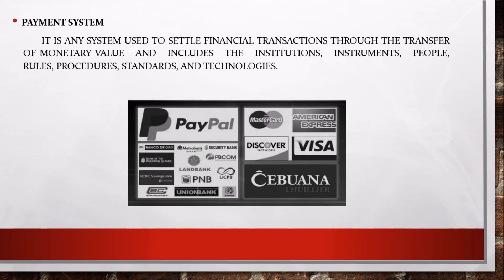How about a payment system? A payment system is any system used to settle financial transactions through the transfer of monetary value, and includes the institutions, instruments, people, rules, procedures, standards, and technologies involved. Payment method types include credit cards, mobile payment, bank transfer, e-wallets, and prepaid cards. We have PayPal, Cebuana, and GCash.